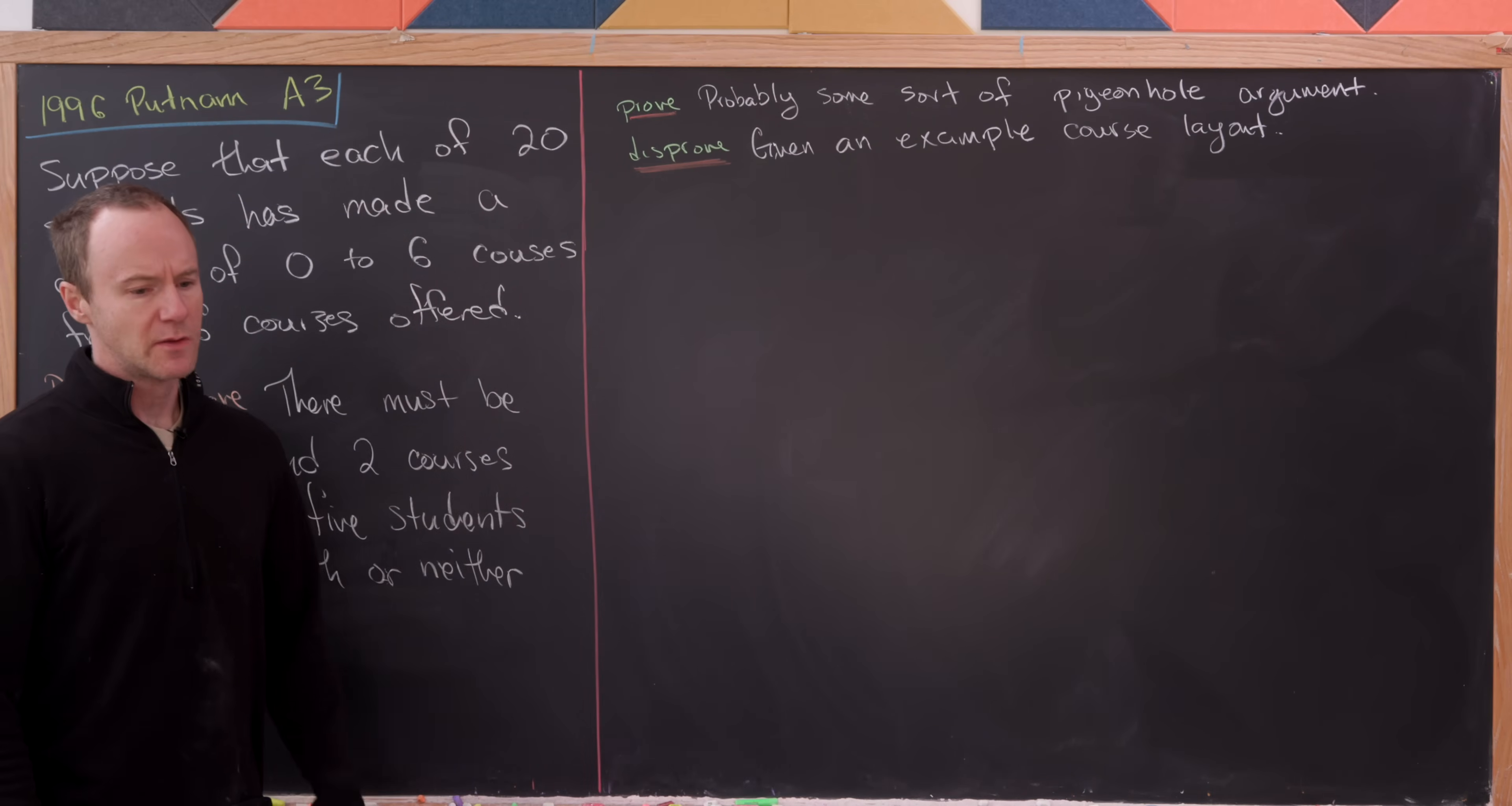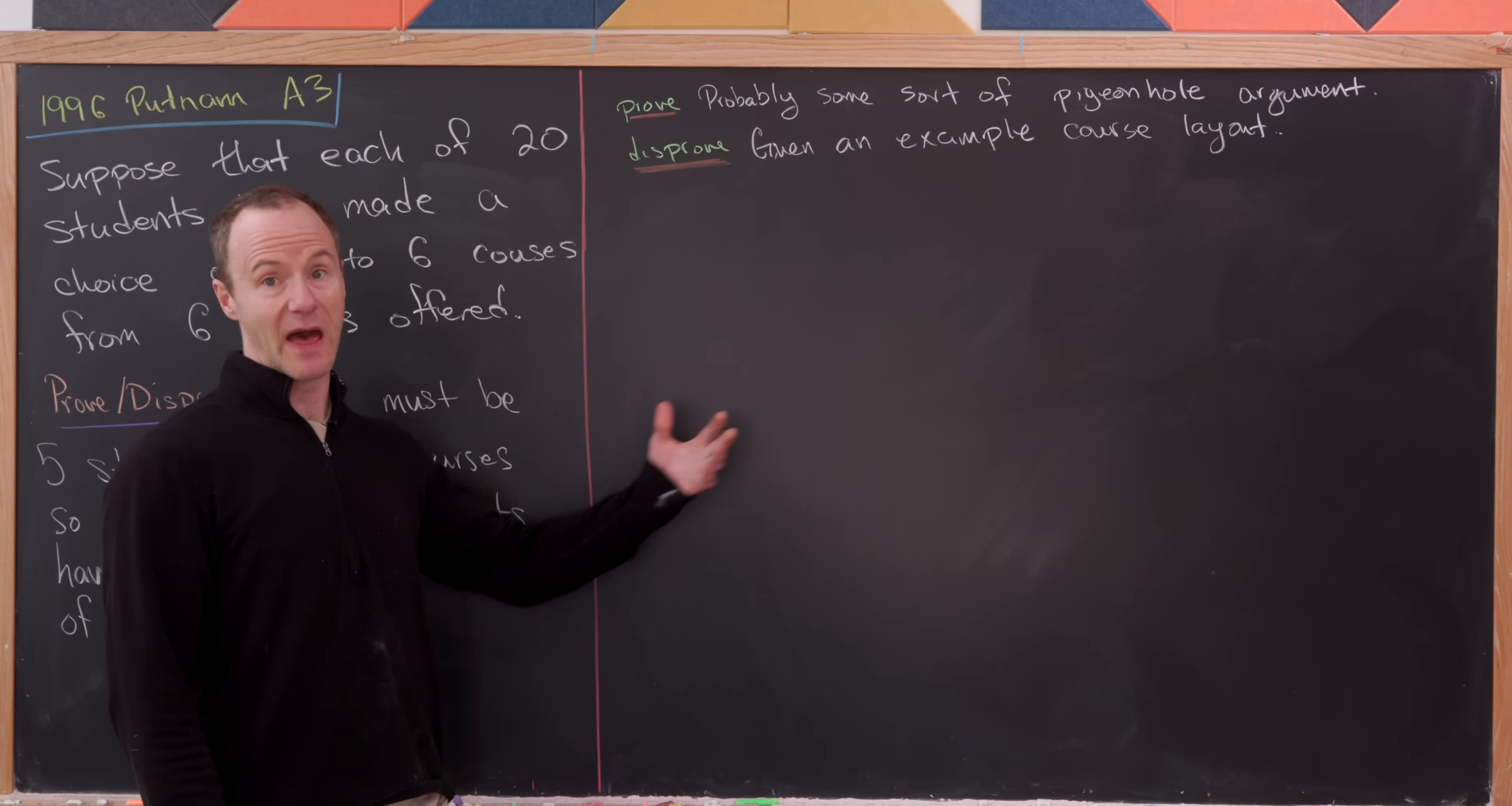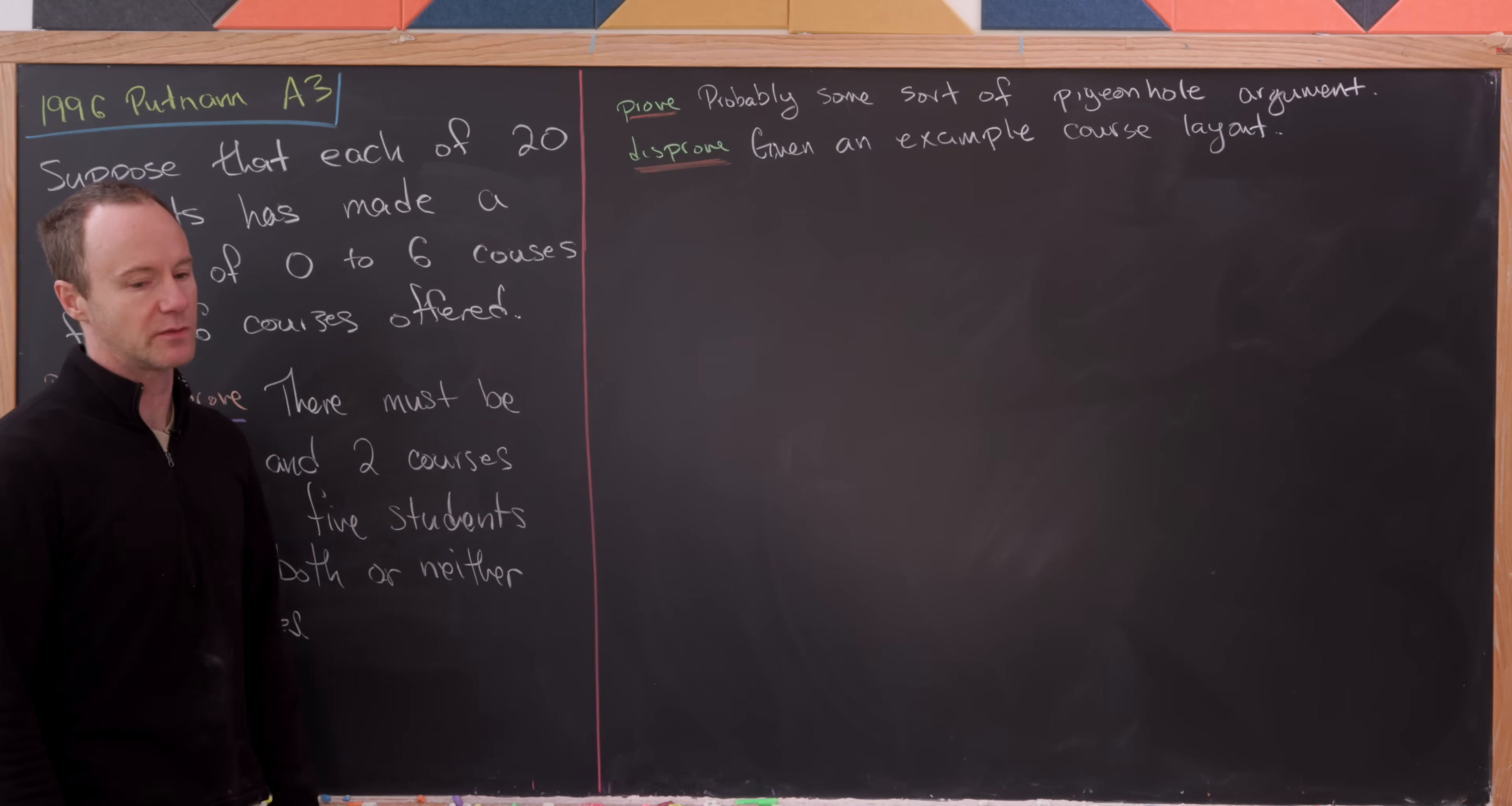So probably a good strategy for all of these, especially when it's building an example, is to look for the example first. And if it seems extremely difficult to find the example, then you're probably going to want to go down the other path. In other words, here we'll look at the disproof example. And if it seems hard to find the disproof example, then the statement is probably true and we will prove it.